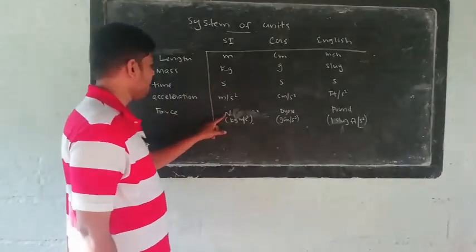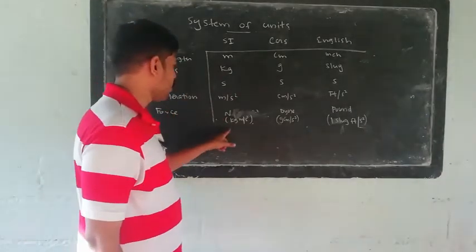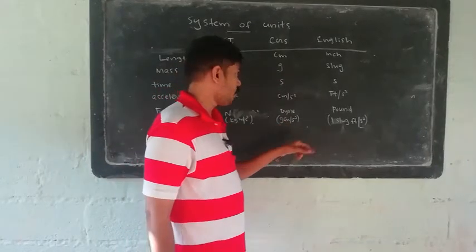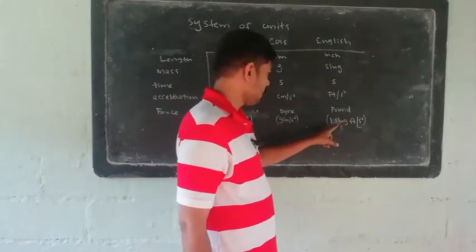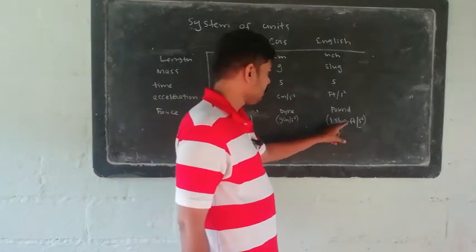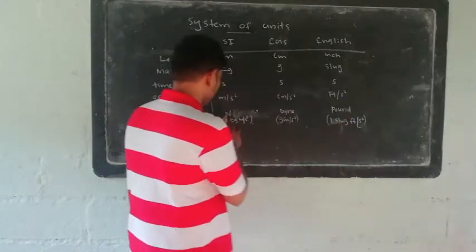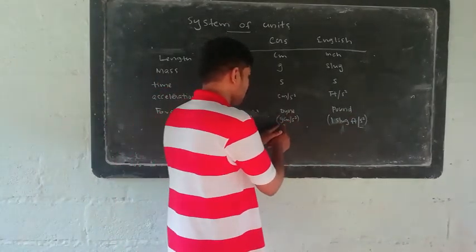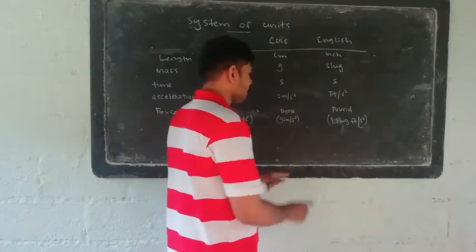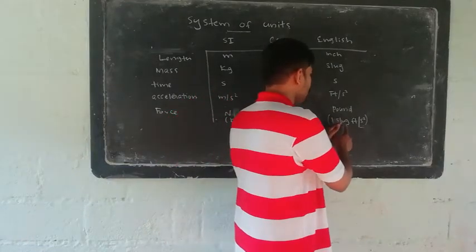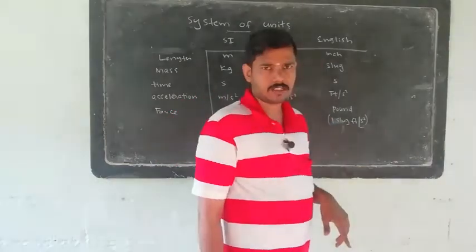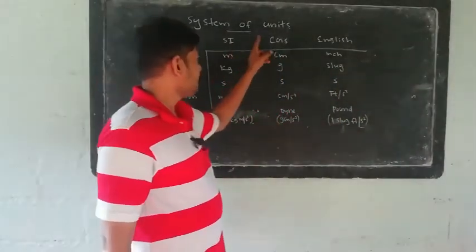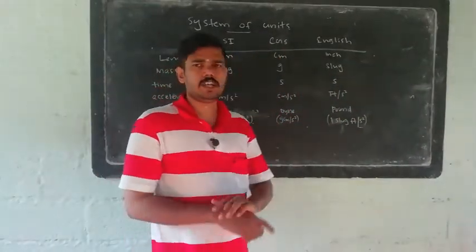For acceleration: in SI the unit is meter per second squared, in CGS it is centimeter per second squared, and in the English system it is foot per second squared. For force: in SI the unit is the Newton, in CGS the unit is the dyne, and in the English system the unit is the pound. Newton = 1 kg·m/s², Dyne = 1 g·cm/s², Pound = 1 slug·ft/s².